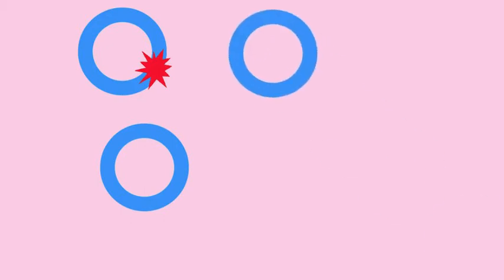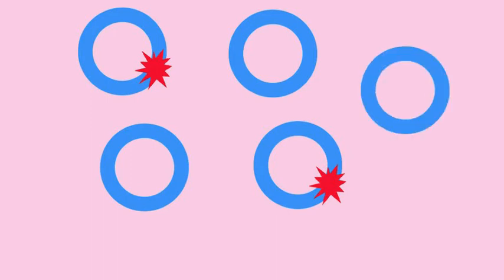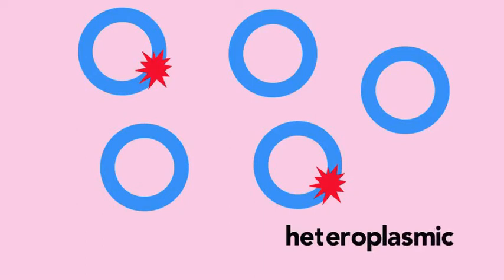Sometimes, within the mitochondria, the mtDNA rings are a mixture of healthy and mutated rings. This is called heteroplasmic. Other times, all of the mtDNA rings carry a mutation. This is called homoplasmic.